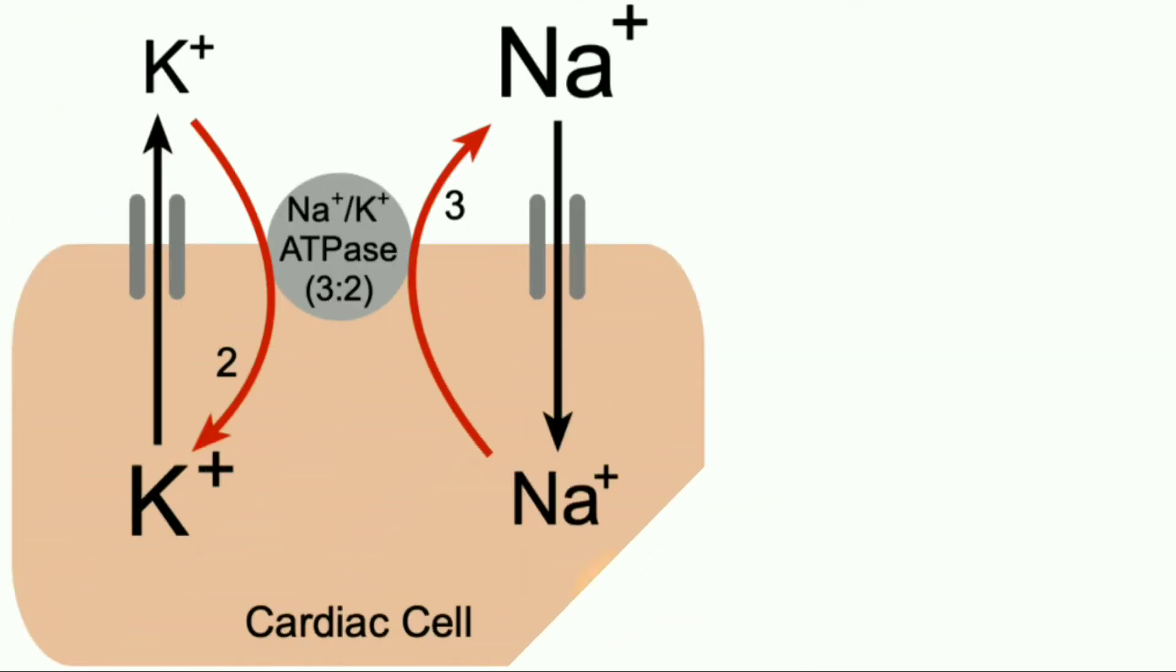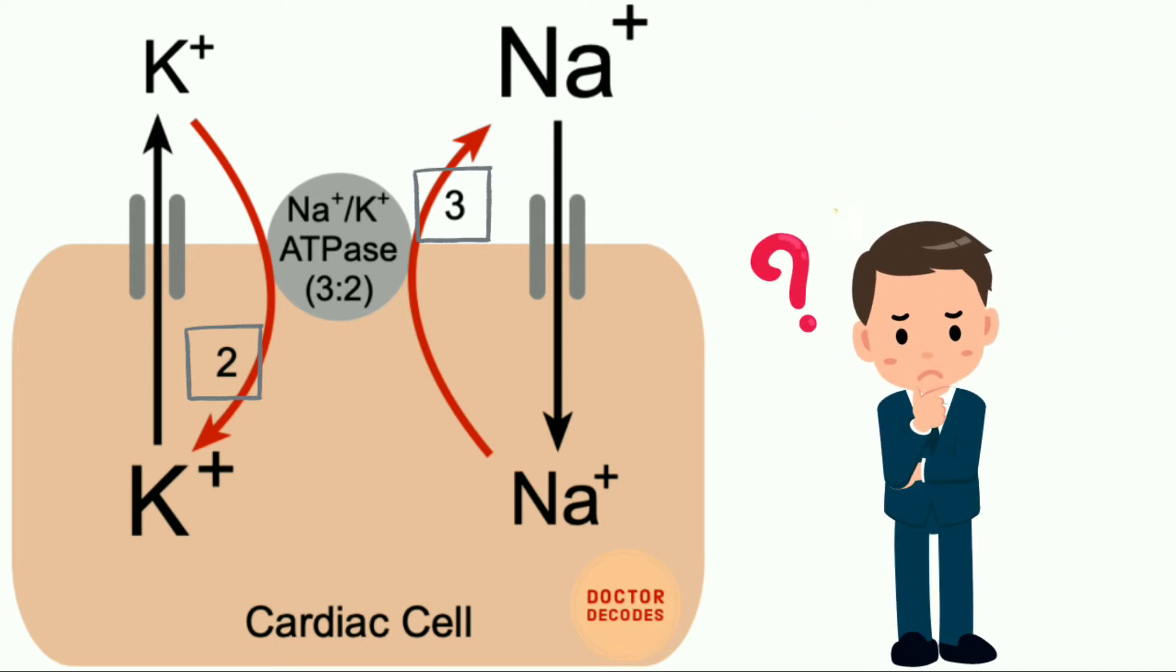In a single cycle of the pump, three sodium ions are extruded from and two potassium ions are imported into the cell. But how to remember which one is two and which one is three?